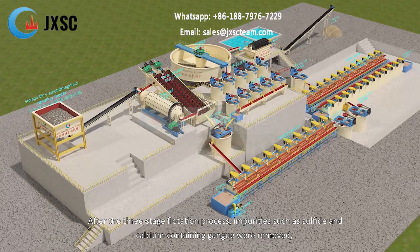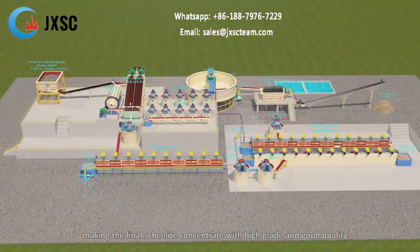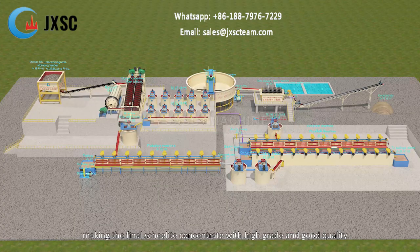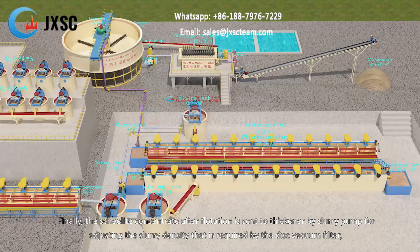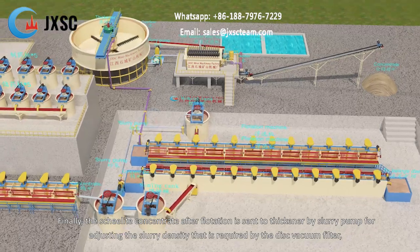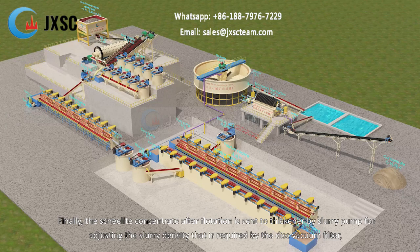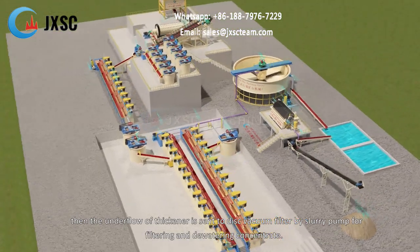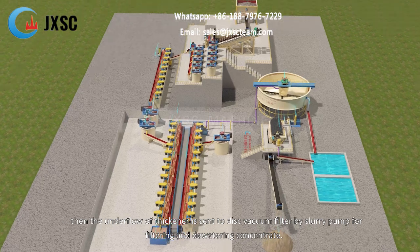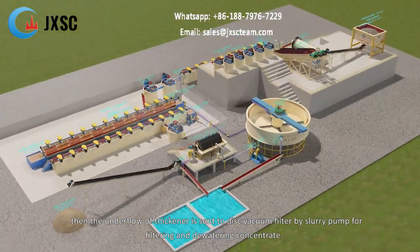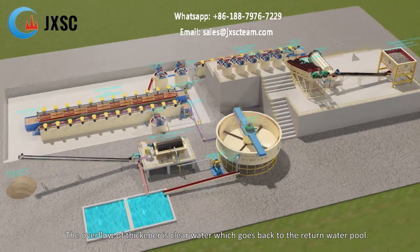After the three-stage flotation process, impurities such as sulfide and calcium-containing gangue are removed, producing a final Scheelite concentrate with high grade and good quality. The Scheelite concentrate after flotation is sent to a thickener by slurry pump for adjusting the slurry density required by the disc vacuum filter. The underflow of the thickener is then sent to the disc vacuum filter by slurry pump for filtering and dewatering the concentrate. The overflow of the thickener is clear water, which goes back to the return water pool.